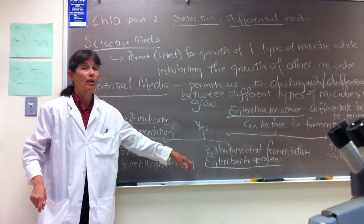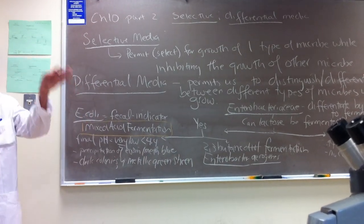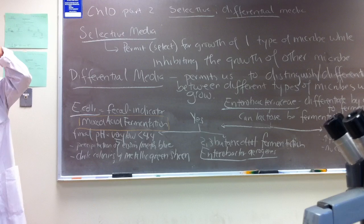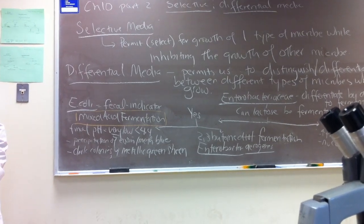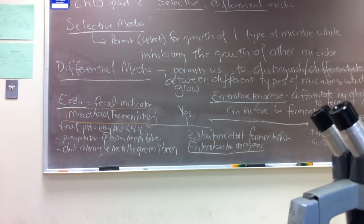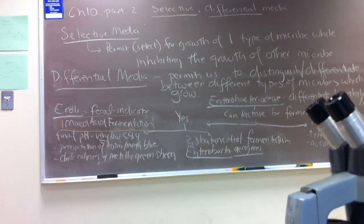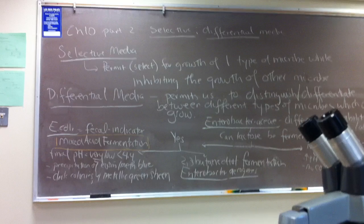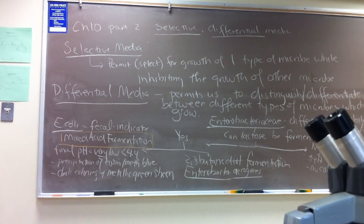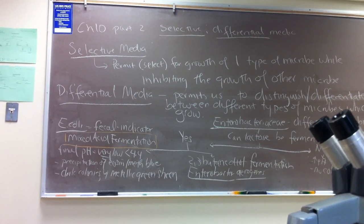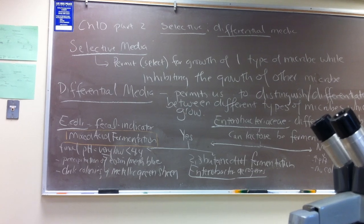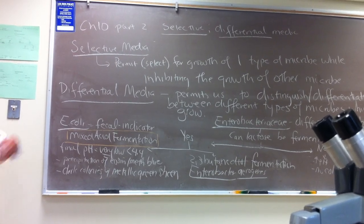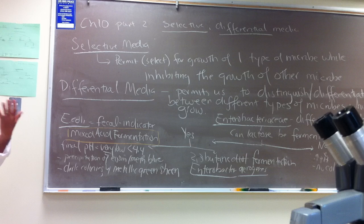Enterobacter aerogenes can be found growing in decaying organic matter out in nature. So if in a well water sample we didn't find E. coli, we just found lots of Enterobacter aerogenes, we're a little less worried because this might just represent soil contamination of the water, not fecal contamination. So the question is, how can we distinguish these two? They're so similar.